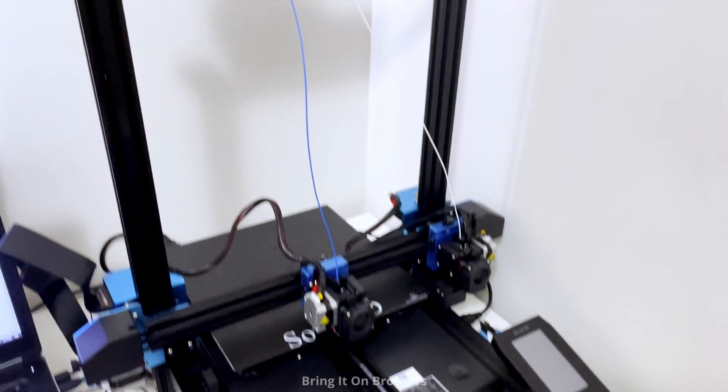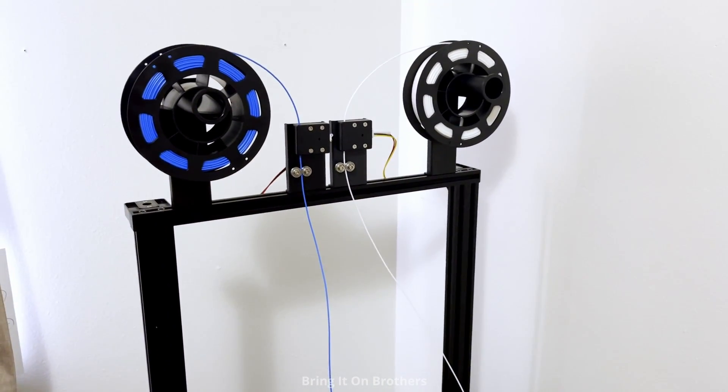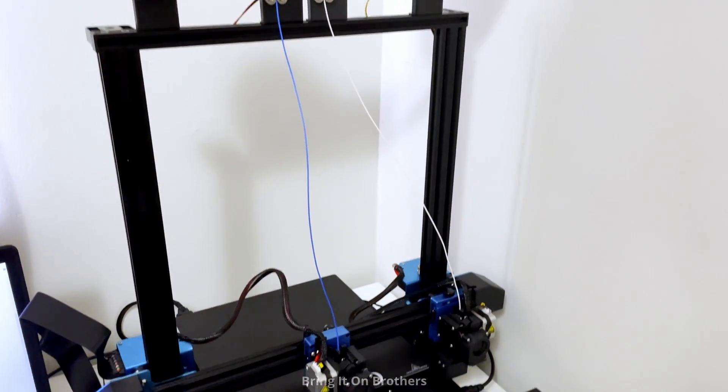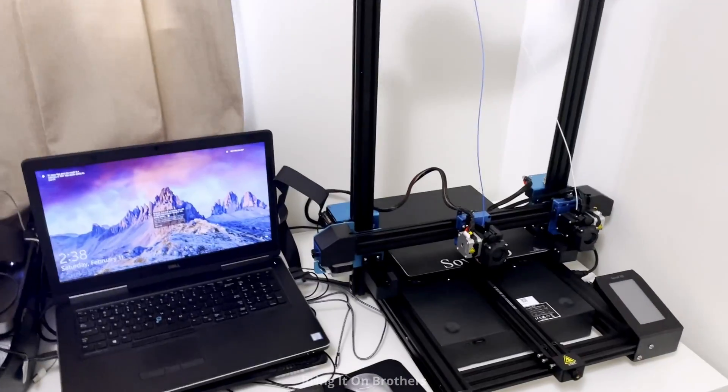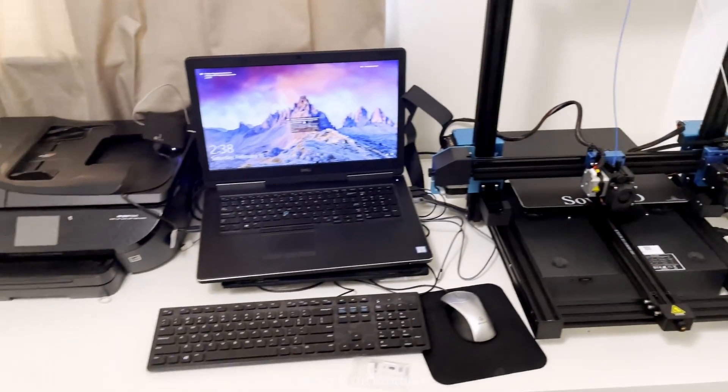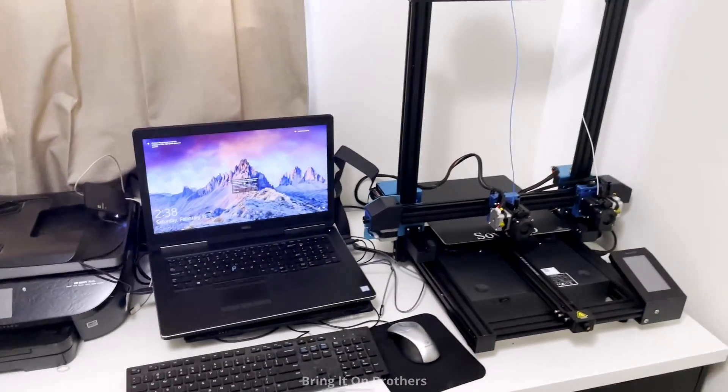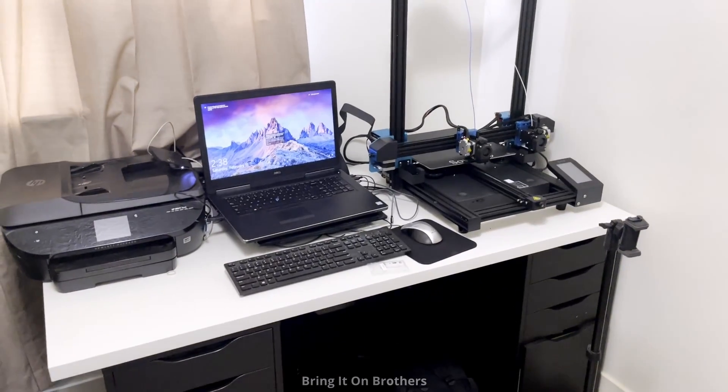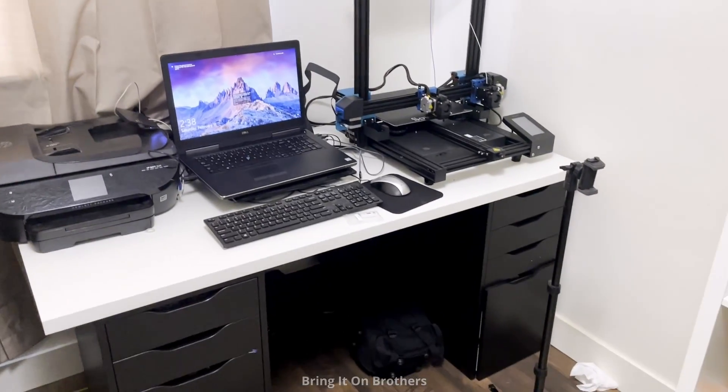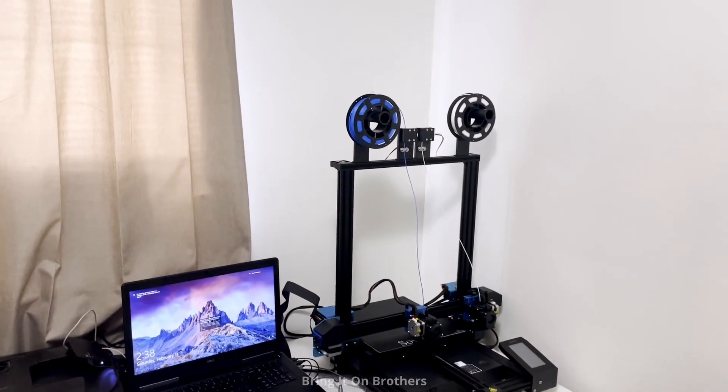Alright, here it is all set up. I got the filament in there. I'm going to go ahead and do a test print to see how it does. Yeah, I kind of got a problem. I don't have much space on my desk with a 3D printer. I got a super small house, so I don't have another place for my printer. So what I'm going to show you is how to make a shelf that can go right in the corner.